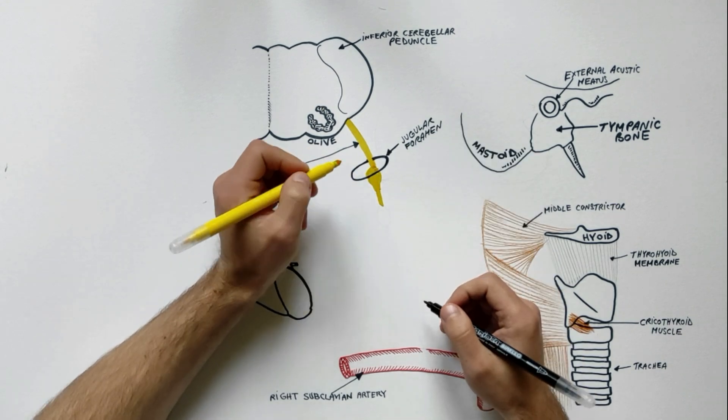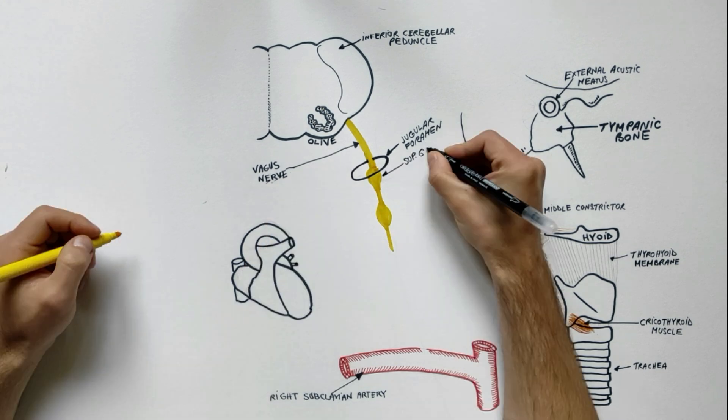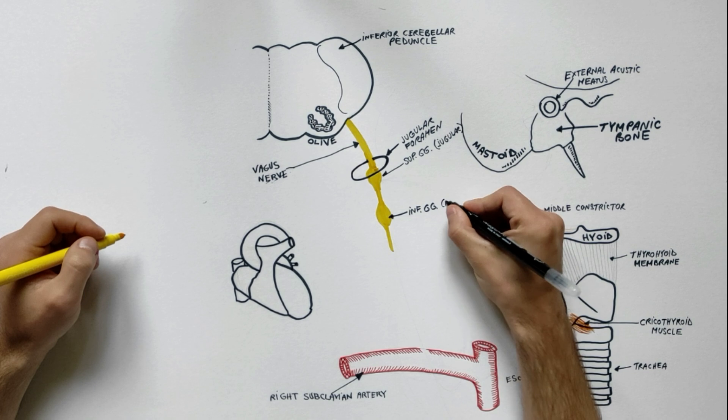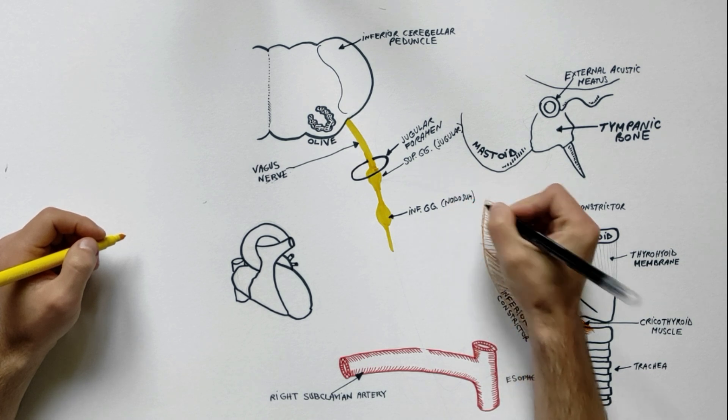Its two sensory ganglia, the superior also called jugular and the inferior also called nodosum, are located on the nerve.